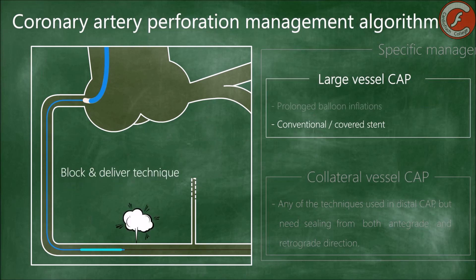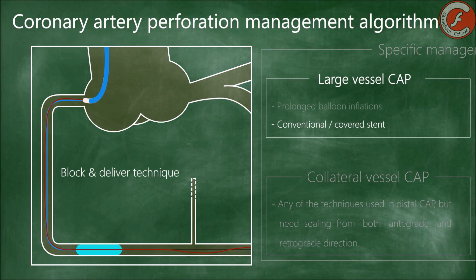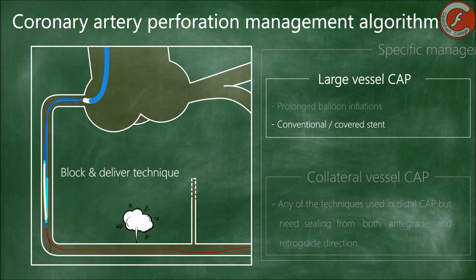The block-and-deliver technique can be used with guide catheters of 8 French or more. This involves the introduction of a covered stent through the guide catheter that was used to navigate the blocking balloon. As the catheter lumen is wide enough, it is possible to keep the balloon inflated in the coronary artery while the covered stent is advanced through the catheter, allowing bleeding to be contained practically until the last moment — until the covered stent is ready to be implanted.